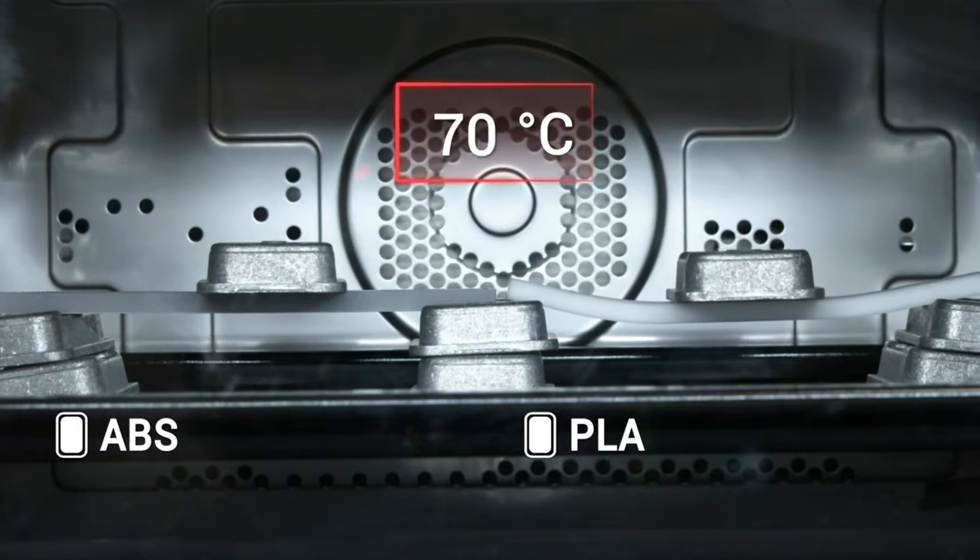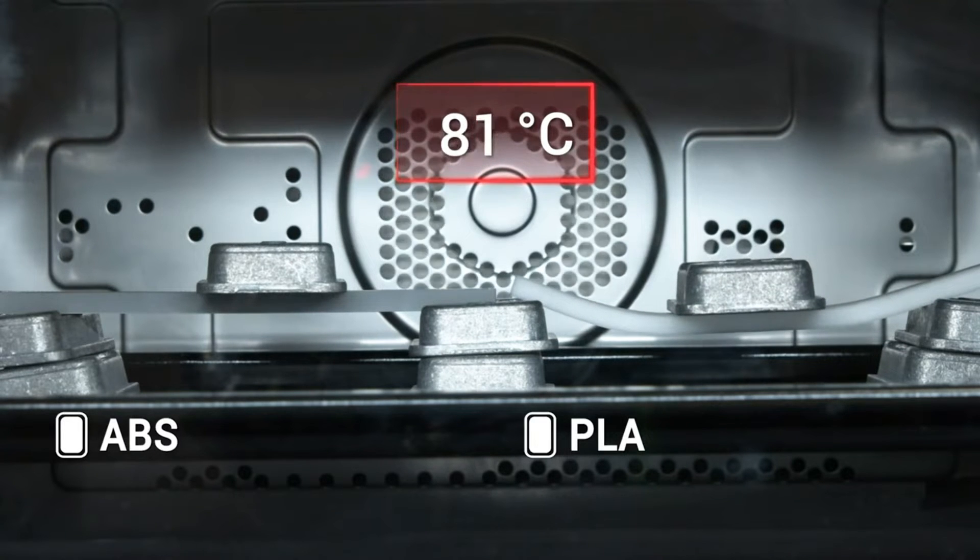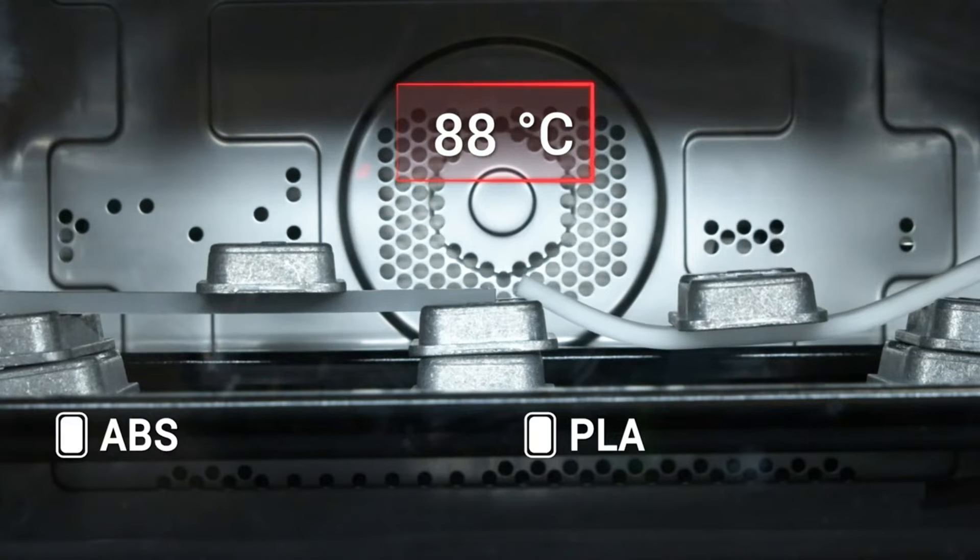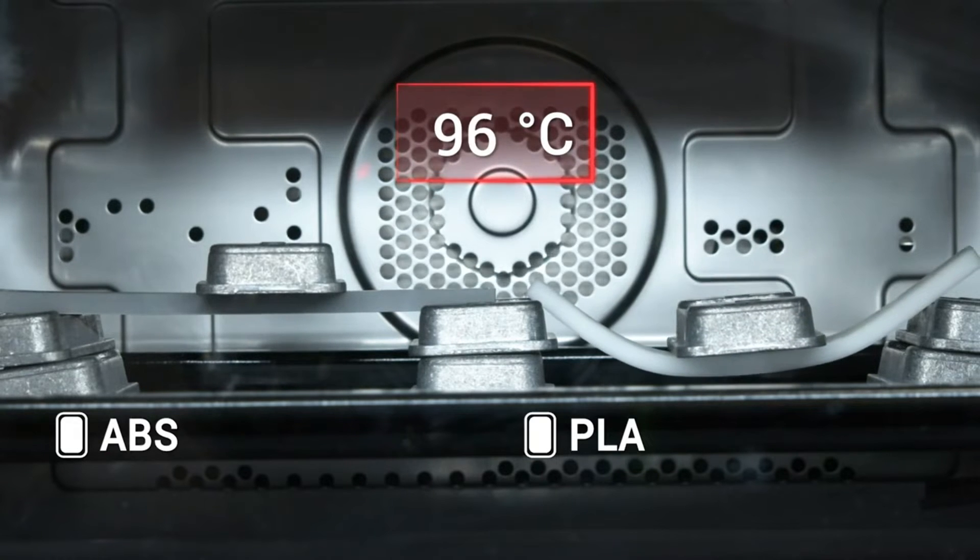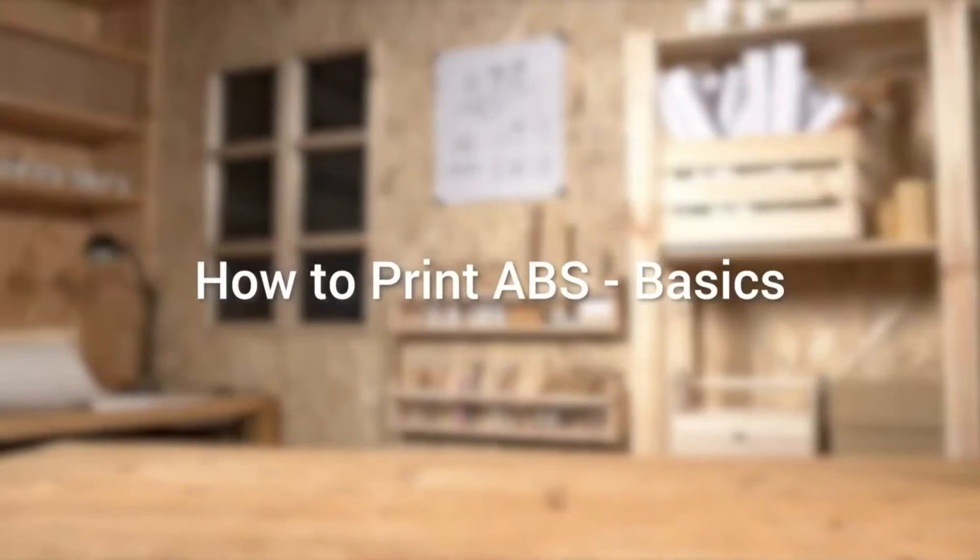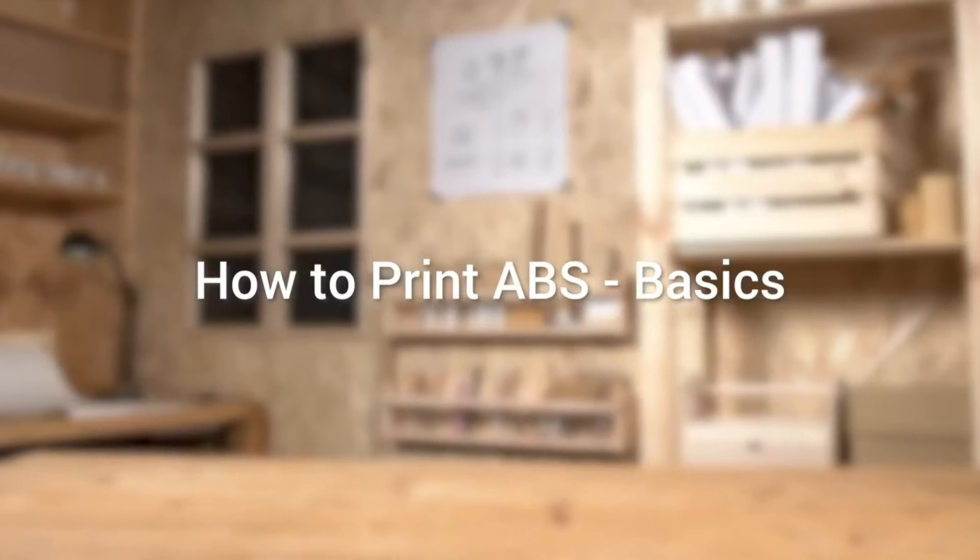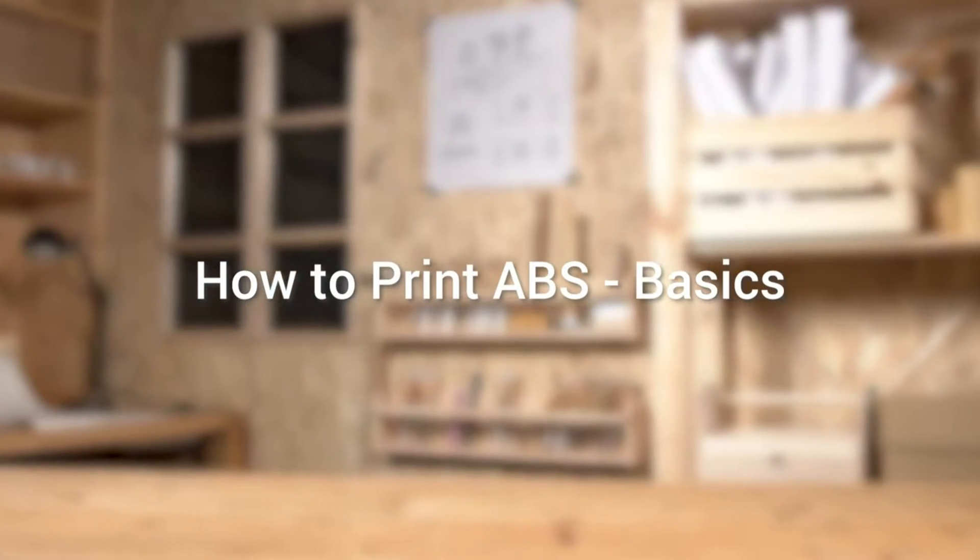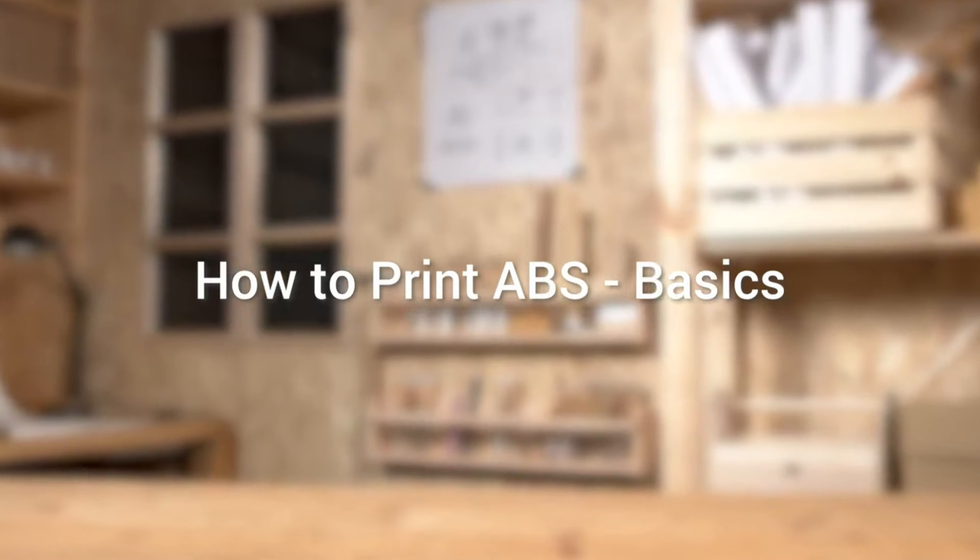That means ABS can be used in a hotter environment or as mechanical structures. Examples include automobile parts, machine enclosures, and some outdoor applications. Though ABS is better for practical uses, it's trickier to print with. You can follow these rules for a better printing experience.